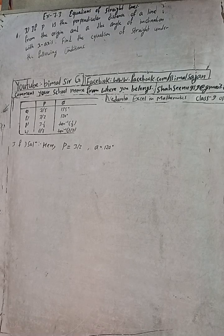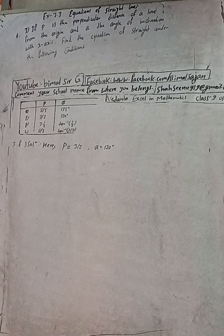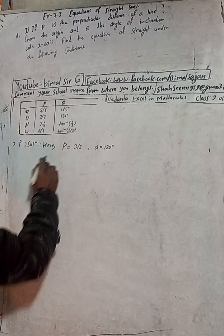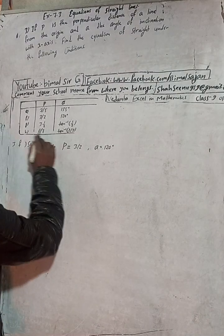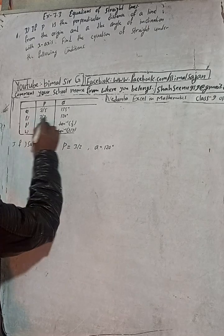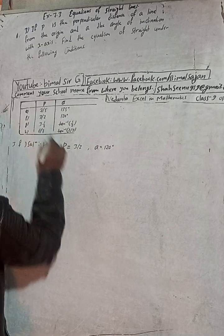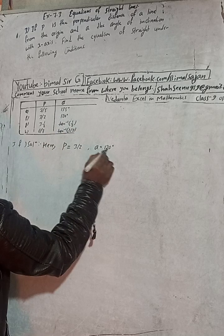This is question number 3f. Here, p is the perpendicular distance given as 3/2, and alpha, the angle of inclination, is given as 120 degrees. So we have to find the equation of the line. The data for problem f: p is 3/2 and alpha is 120 degrees.